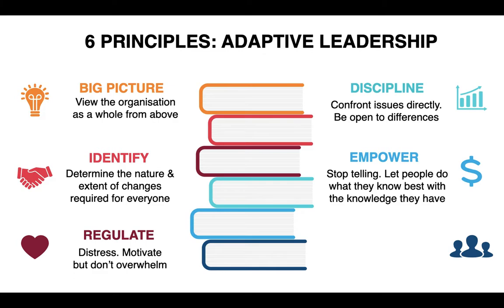The fifth principle is empowering people — stop telling and let people do what they know best with the knowledge they have. For example, if you hire a video agency but then tell them exactly what to do, you're doing their job for them. An adaptive leader allows followers to use whatever skills they already have. The sixth principle is protecting people — giving all people a voice. If someone needs to speak up, feels affected, has mental health issues, or is a minority feeling oppressed, you need to protect them and make sure they all have a voice.